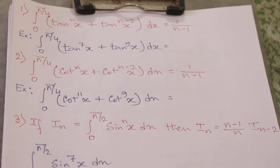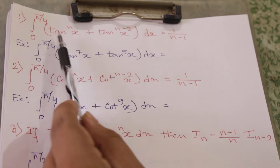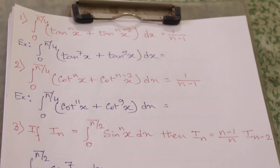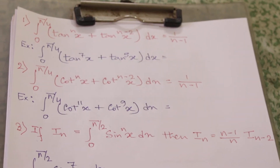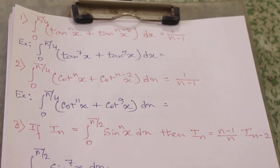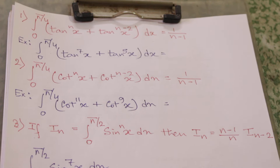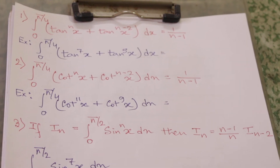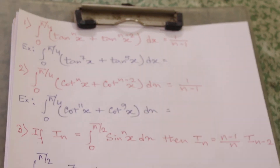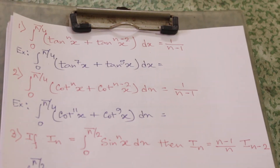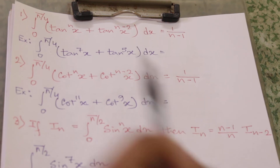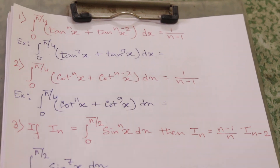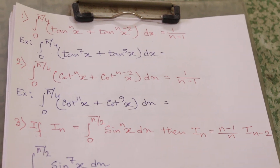Shortcut number one: the integral from 0 to π/4 of tan^n(x) + tan^(n-2)(x) dx, where n may be any integer, its value will be equal to 1/(n-1).